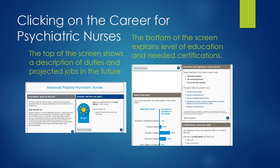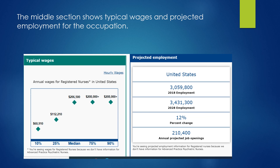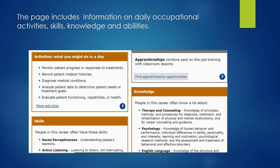You'll notice that in the previous slide there was a list of careers. I took the interest assessment and these are the careers it gave me. For our example, let's choose the first one: a career in advanced psychiatric nursing. When you choose a career, your page will look similar to this. The top of the screen shows a description of duties and projected jobs in the future — a sunshine icon means the outlook is good. The bottom explains levels of education and needed certifications. The middle section shows typical wages and projected employment for the occupation across the entire United States. Note that cost of living affects whether a salary is higher or lower. The page also includes information on daily occupational activities, skills, knowledge, and abilities.